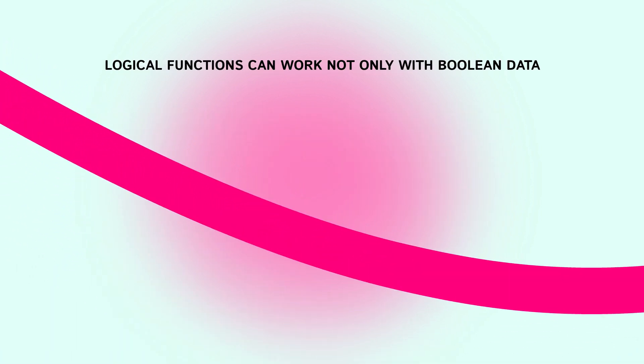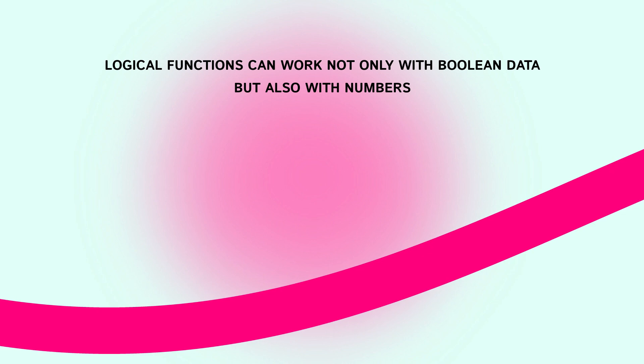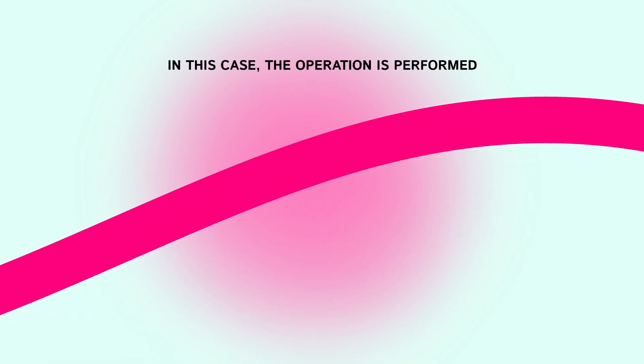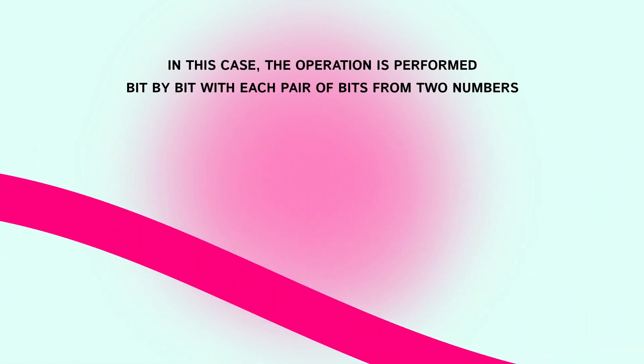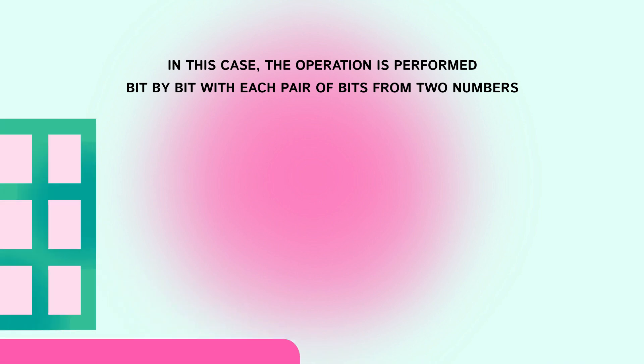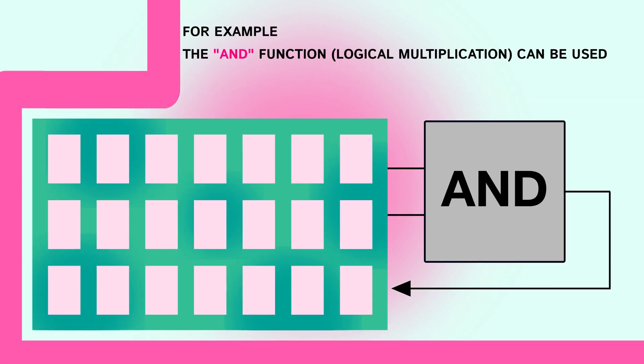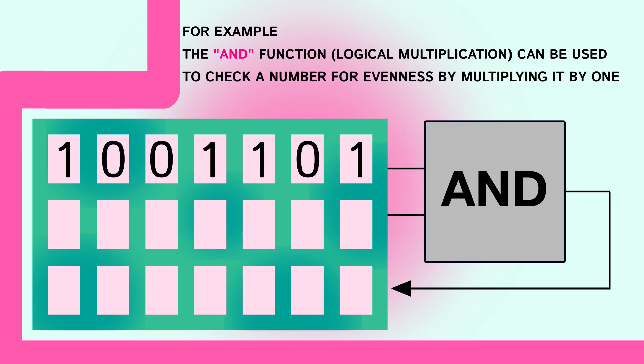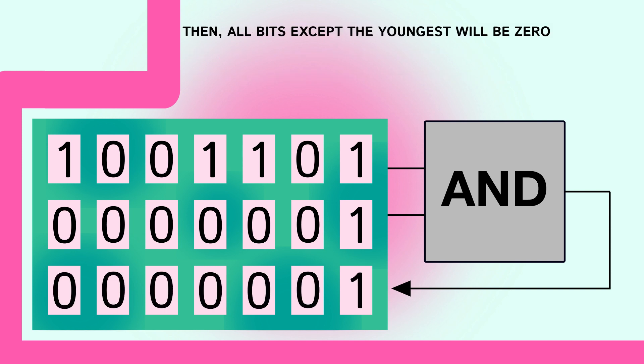Logical functions can work not only with boolean data but also with numbers. In this case the operation is performed bit by bit with each pair of bits from two numbers. For example, the AND function logical multiplication can be used to check a number for evenness by multiplying it by 1. Then all bits except the youngest will be 0 or 1. If 0 the number is even, if 1 the number is odd.